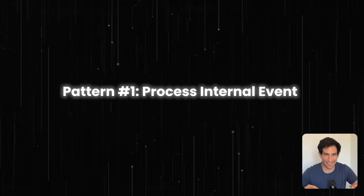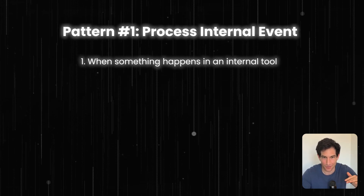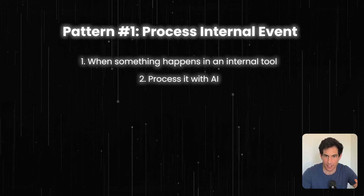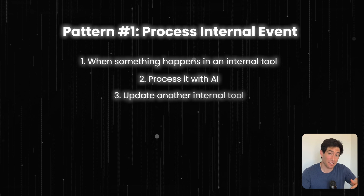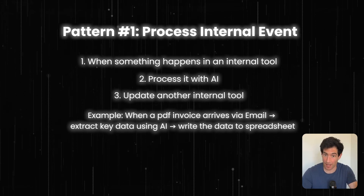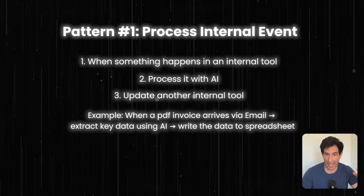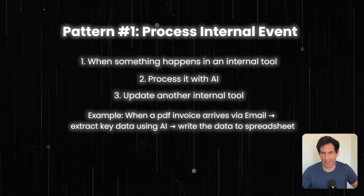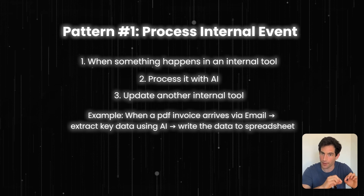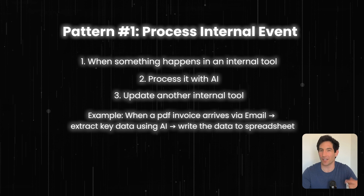To make things more concrete, I want to give you the four patterns of AI agent that I use over and over again in my work. The first pattern is handling an internal event. Something happens in one of our internal tools, we ask AI to process that event or make some intelligent designation based on it, and then something else happens in another internal tool. A canonical example: when an email comes in with an invoice attached as a PDF, we ask the AI to analyze that PDF, extract the vendor name, the amount, and the due date, and then write those fields into a spreadsheet.